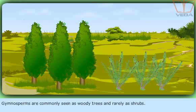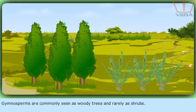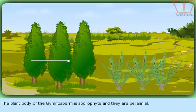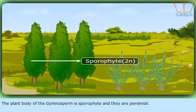Gymnosperms are commonly seen as woody trees and rarely as shrubs. The plant body of the gymnosperm is sporophyte and they are perennial.